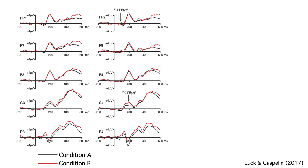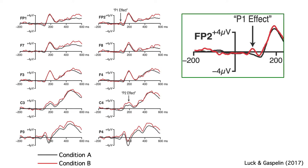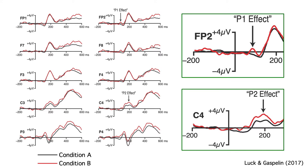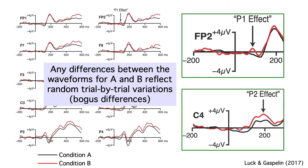When I looked at these waveforms, I saw two differences between conditions A and B that looked pretty big. One was a so-called P1 effect — a more positive voltage for condition B than for condition A across all the right hemisphere electrode sites. The other was a so-called P2 effect — a more positive voltage for condition B at the central and parietal sites in both hemispheres. But remember, these effects just reflect random variation in the data, since conditions A and B were created by randomly assigning each EEG epoch to one condition or the other.